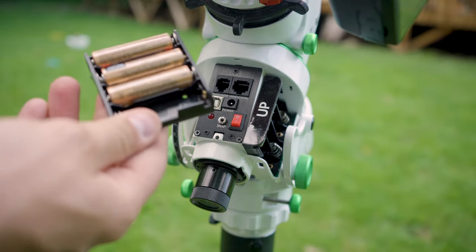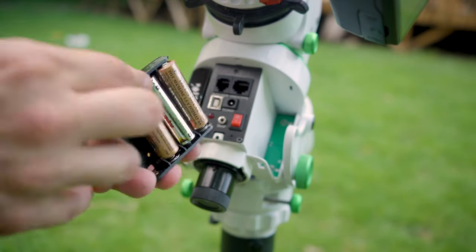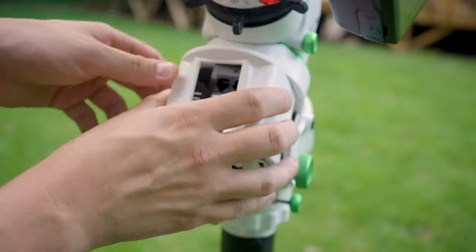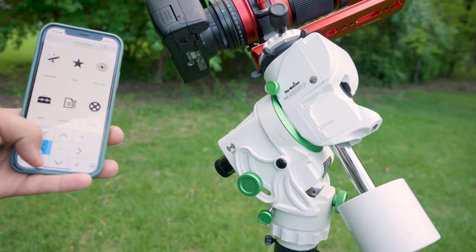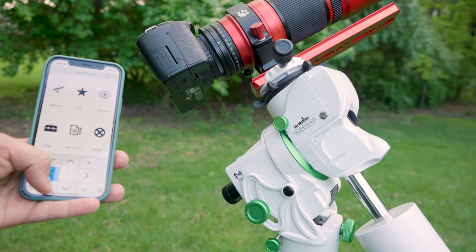Integrated in the mount head itself is room for 8 AA batteries. If you plan on taking this mount to the furthest and most remote locations you can rely on only 8 AA batteries to power this mount. This means you can possibly operate this entire unit without a single cable.